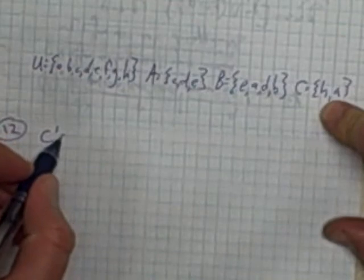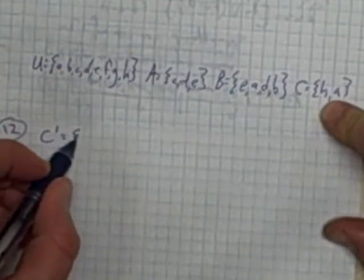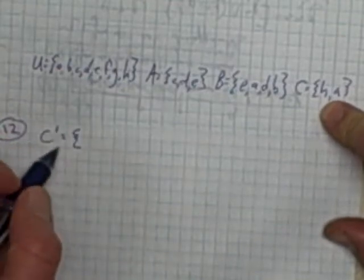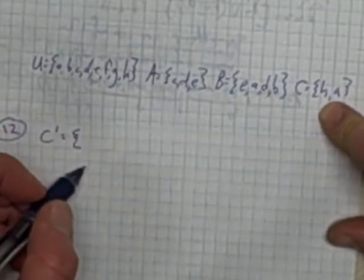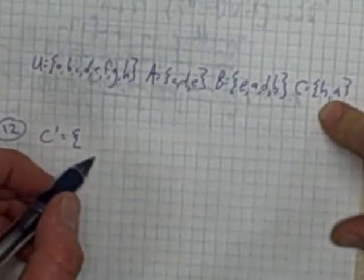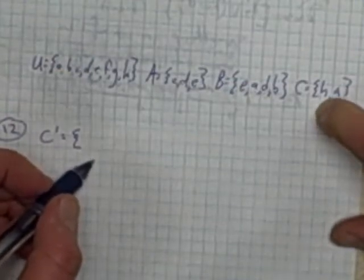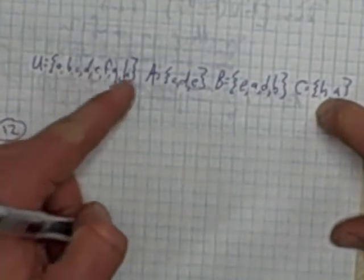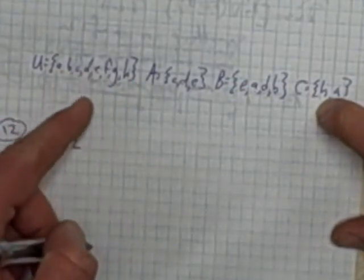The complement of C is basically just the opposite of C — it's all the things that aren't in C. So A is in C, and H is in C, and everything else in the universe is not in C.